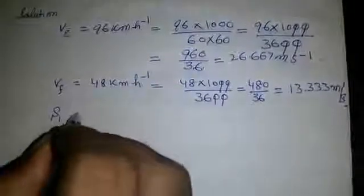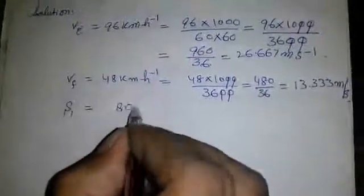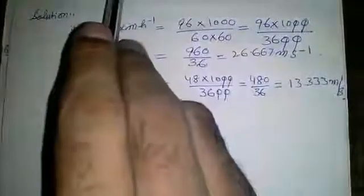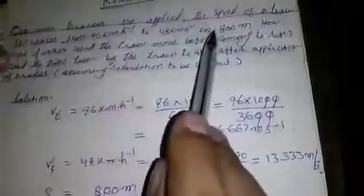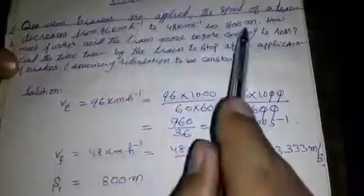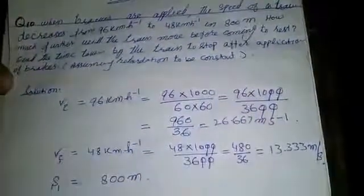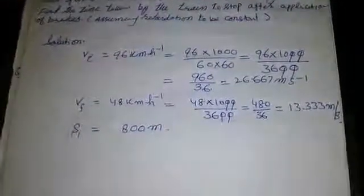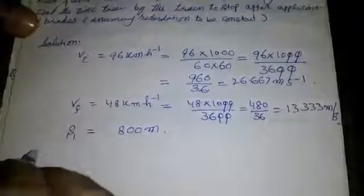S1 is equal to 800 meters. In this process the train covers a distance of 800 meters, which we denote as S1. We have to find the time taken and how much further distance will be covered. Now we need to calculate the acceleration, and we need to use the third equation of motion.